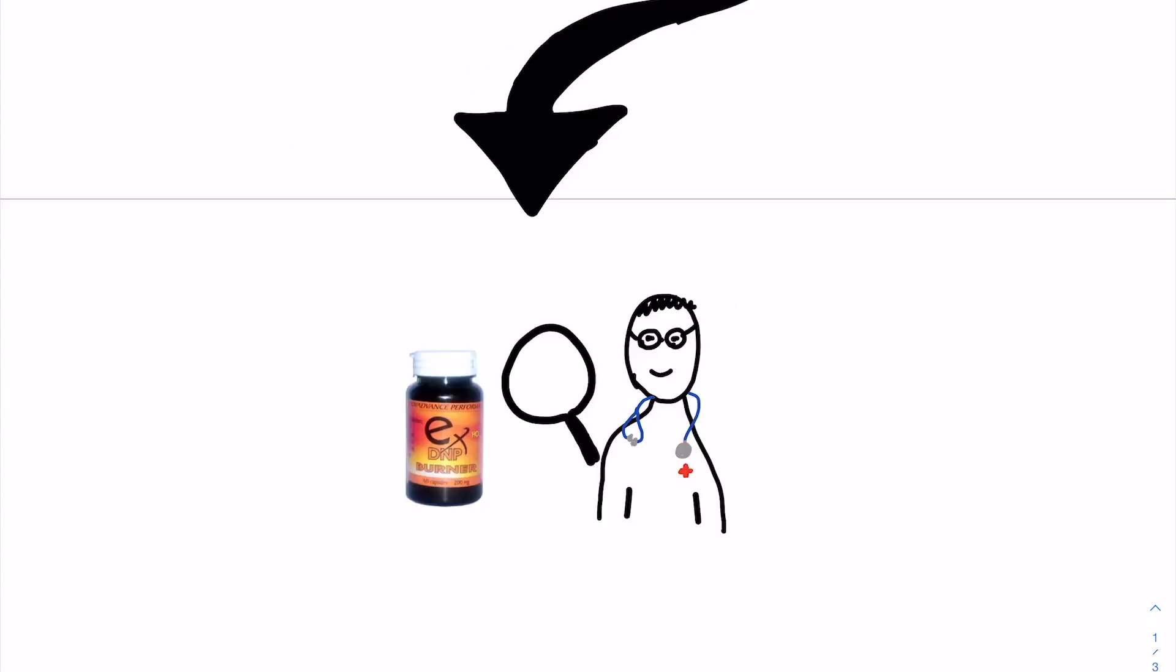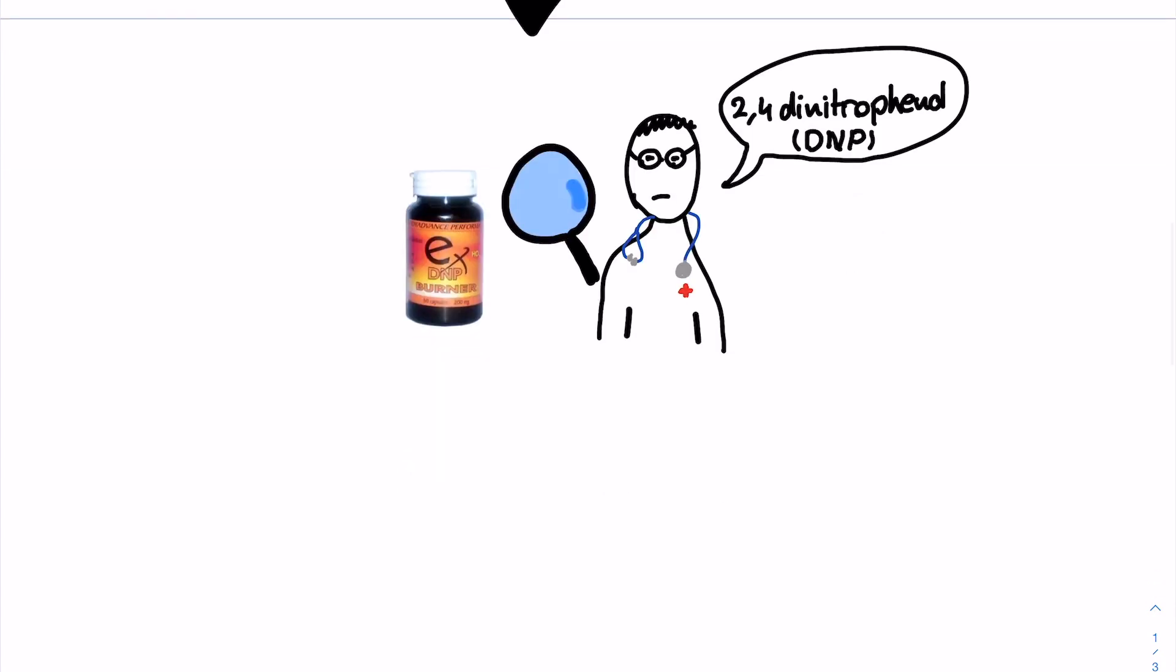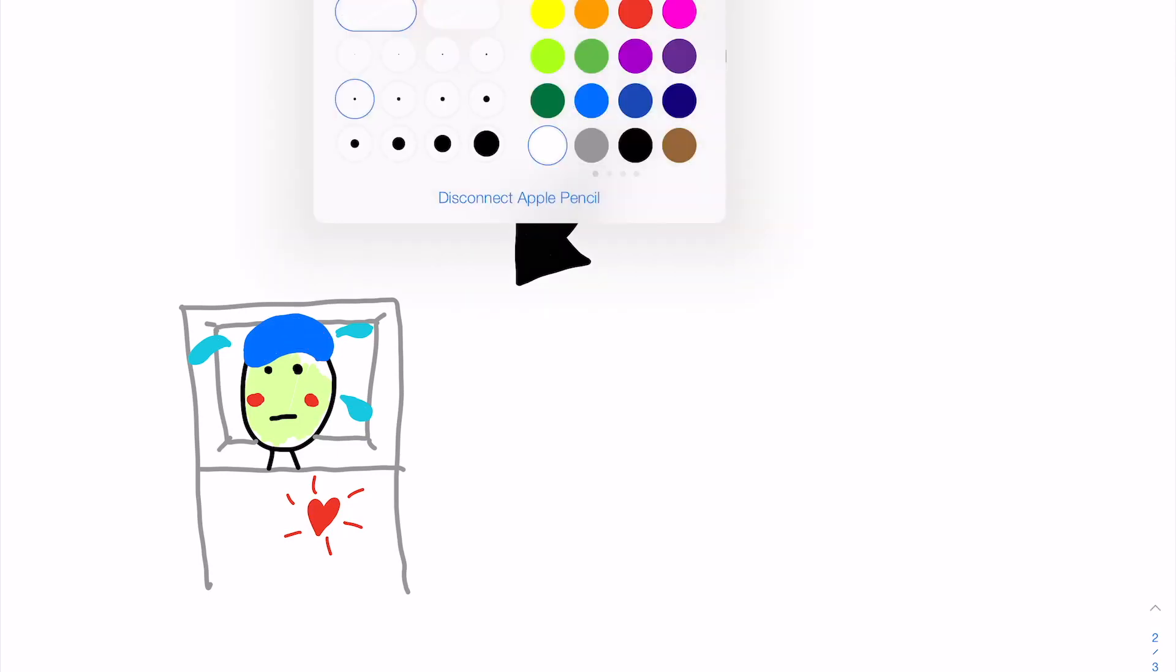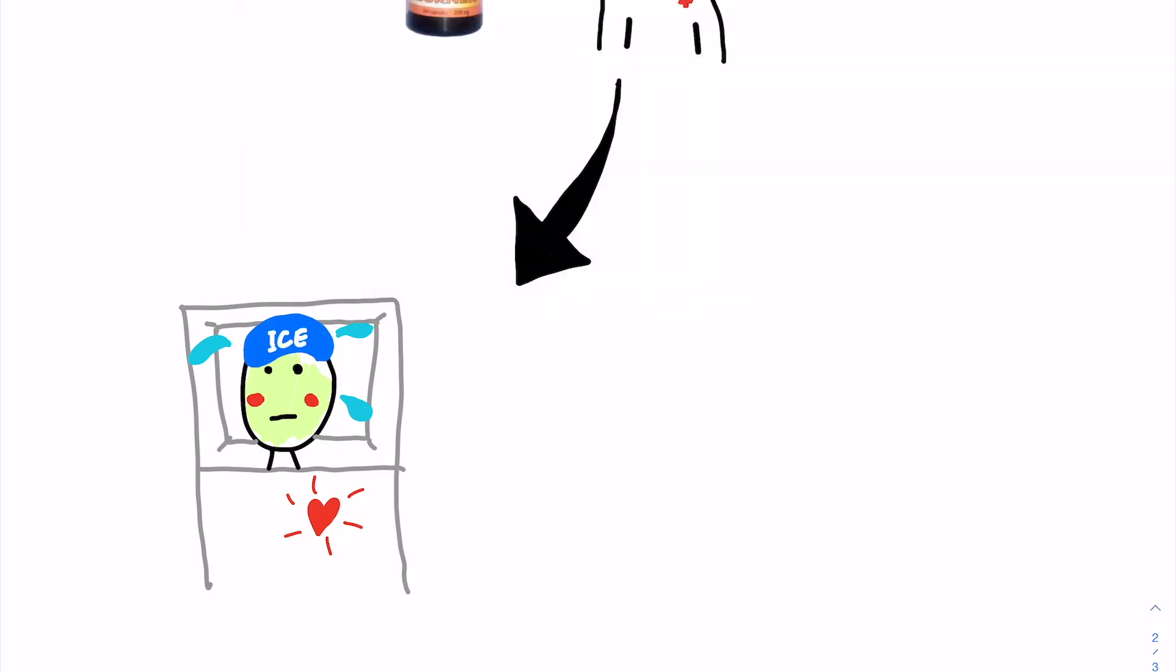The doctors examine the pills and find 2,4-dimetrophenol, or DNP, to be the active ingredient. With this knowledge, the doctors are now aware of how life-threatening his condition actually is, but also know that all they can do is treat his symptoms and prioritize lowering his body temperature. There is no antidote for this.